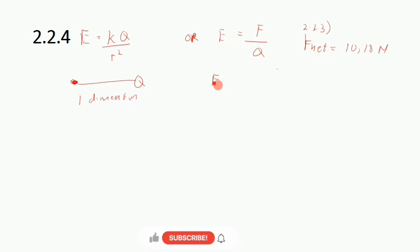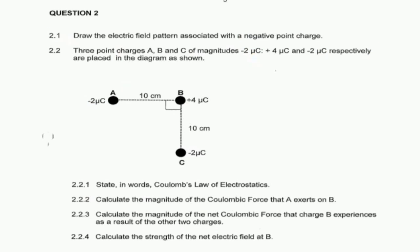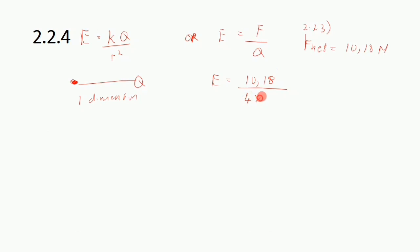Since we know the net electrostatic force, we apply E = F/q. So E = 10.18 divided by the charge on B, which is 4 × 10⁻⁶ C. This gives 2.55 × 10⁶ N/C. Do not forget the SI unit for electric field strength is Newton per Coulomb.